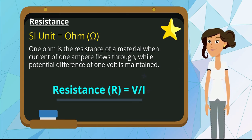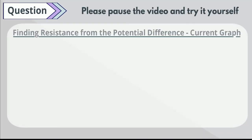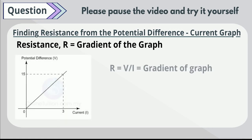The equation of resistance is V over I. In the potential difference against current graph, the gradient of the graph is equal to the resistance of the resistor. From the diagram, the gradient of the graph is 5. Therefore, the resistance is 5 ohms.